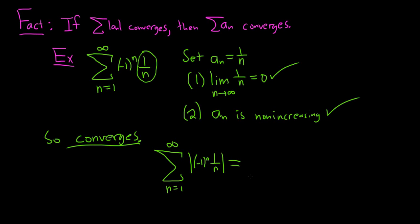So this is equal to the infinite sum, as n runs from 1 to infinity. When you take the absolute value of negative 1 to the n, the negative 1 to the n goes away, because you end up getting this. Let me show all the steps so you see it.